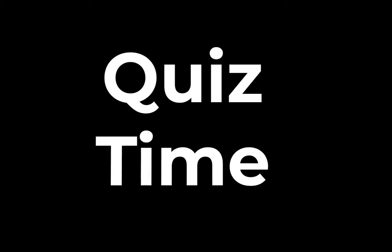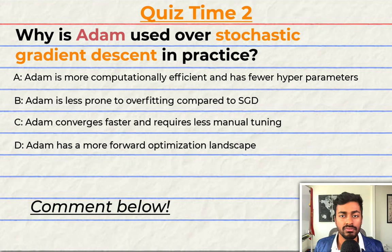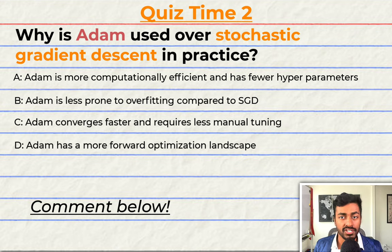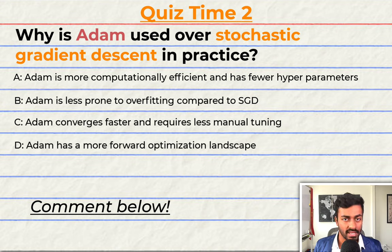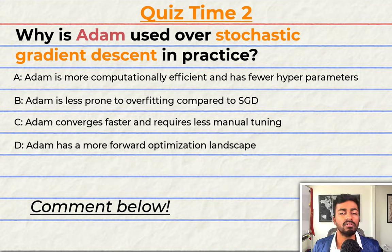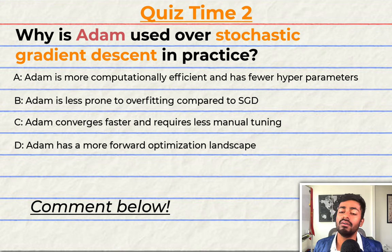Quiz time! Why is Adam used over stochastic gradient descent in practice? A: Adam is computationally more efficient and has fewer hyperparameters. B: Adam is less prone to overfitting compared to stochastic gradient descent. C: Adam generally converges faster and requires less manual tuning. Or D: Adam has a more straightforward optimization landscape. Comment your answer down below and let's have a discussion. That'll do it for quiz time for now — keep paying attention because I will be back to quiz you.